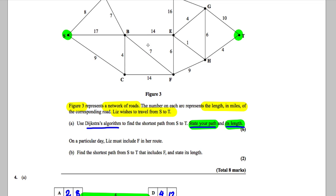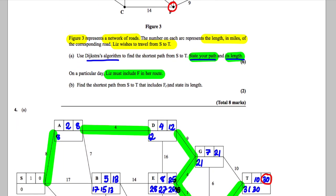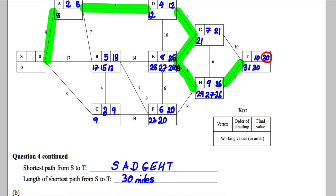The next part, it says, on a particular day, Liz must include F in her route. So she must, must, must include F here in her route. Find the shortest path from S to T that includes F and state its length. So she must include F here.